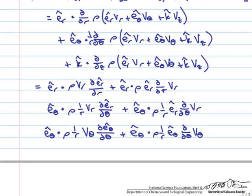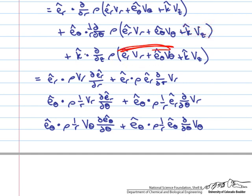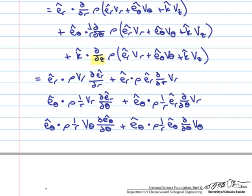Continuing on the next page: k̂ and v_z are not functions of theta, so their derivatives are zero. Similarly, v_r and v_θ are not functions of z, so their derivatives are also zero. We are just left with the two partials from the z terms: k̂ dot (ρ · v_z · ∂k̂/∂z) plus k̂ dot (ρ · k̂ · ∂v_z/∂z).